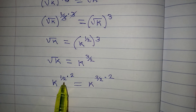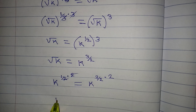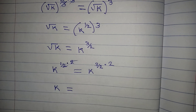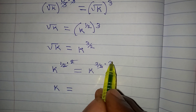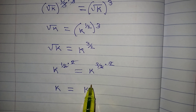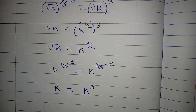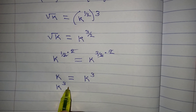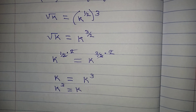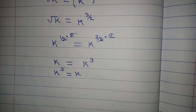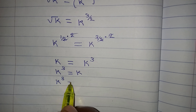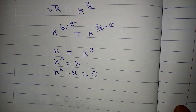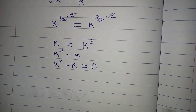The 1/2 and 2 cancel on the left so k is now free. On the right-hand side, 2 cancels 2, giving k to the power of 3. So k cubed equals k. Bringing everything to the left: k cubed minus k equals zero.